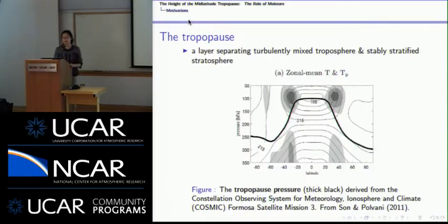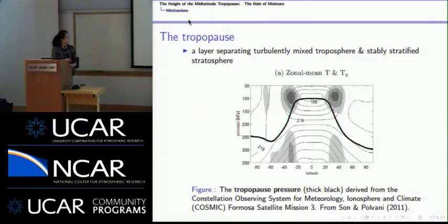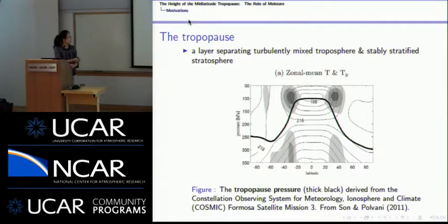First, just a brief introduction about the tropopause and its importance. The tropopause is a layer that separates the turbulently mixed troposphere and the stable stratosphere. This example shows the tropopause pressure derived from cosmic satellite observations — tropopause height is higher at lower latitudes and gradually decreases towards higher latitudes.